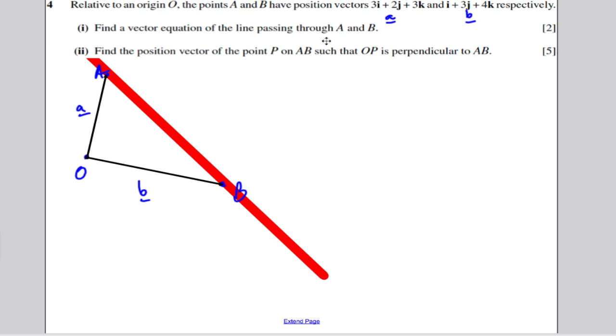So that's the line AB for us. We want to find the point P on AB such that O to P is perpendicular. So we want to find this point here that meets the line AB at right angles, and we want to find the position of this point here.